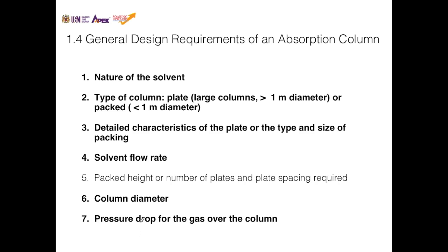And number seven is how much pressure drop are we willing to allow the column to experience. We want to reduce as much as possible the pressure drop in a column to prevent flooding and to make sure the flow — be it solvent or gas — is able to go through the column without hindrance.